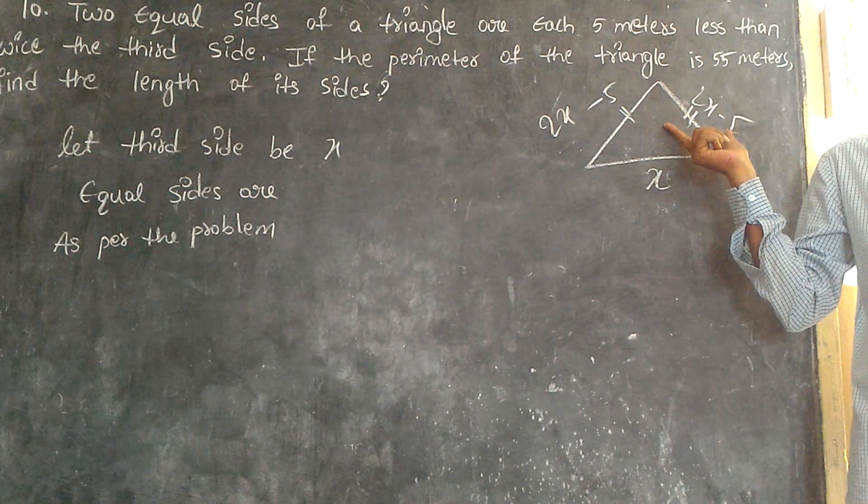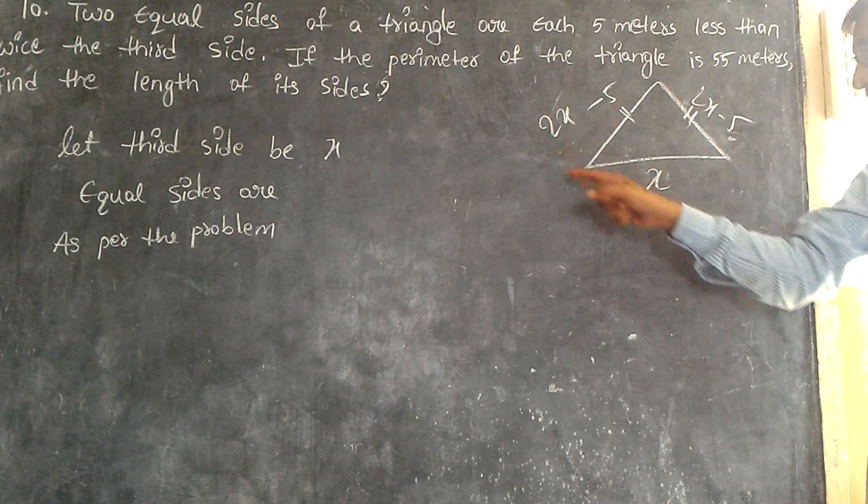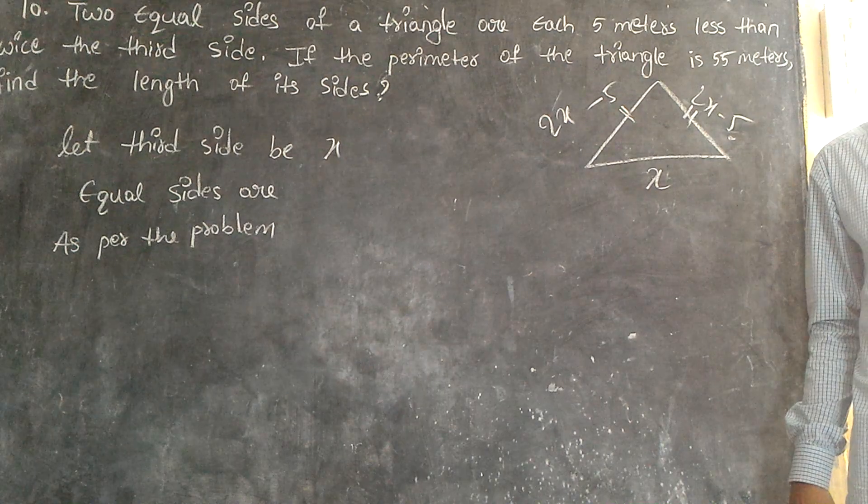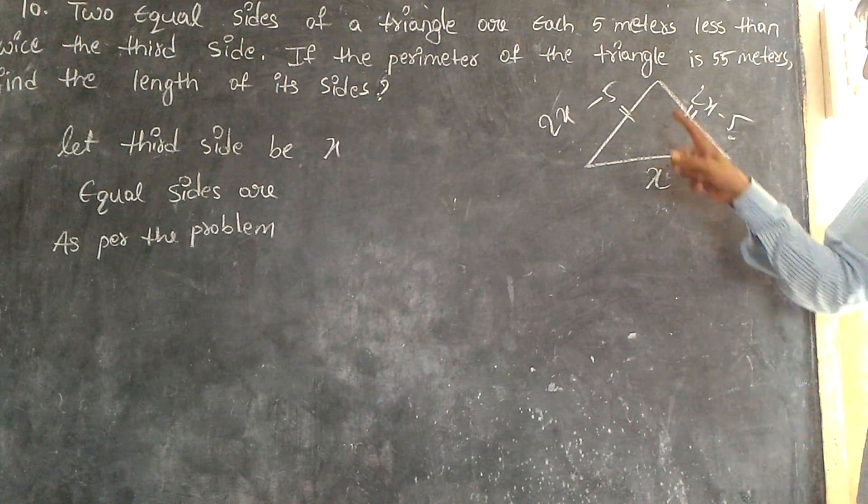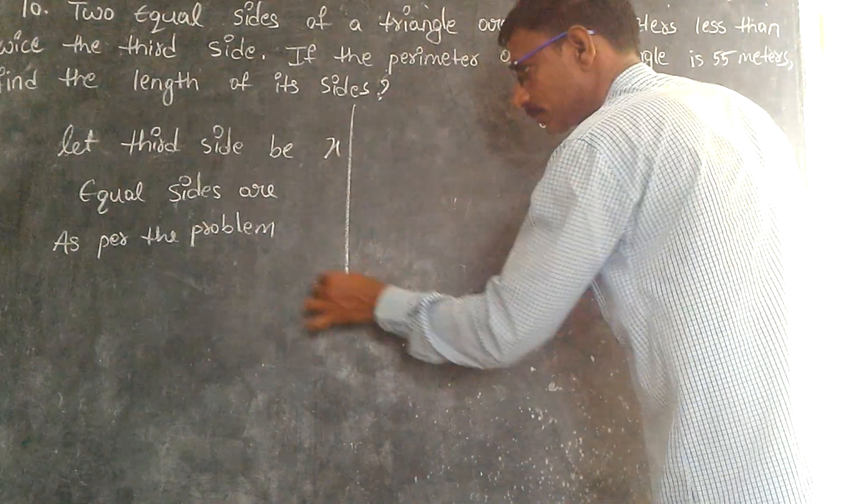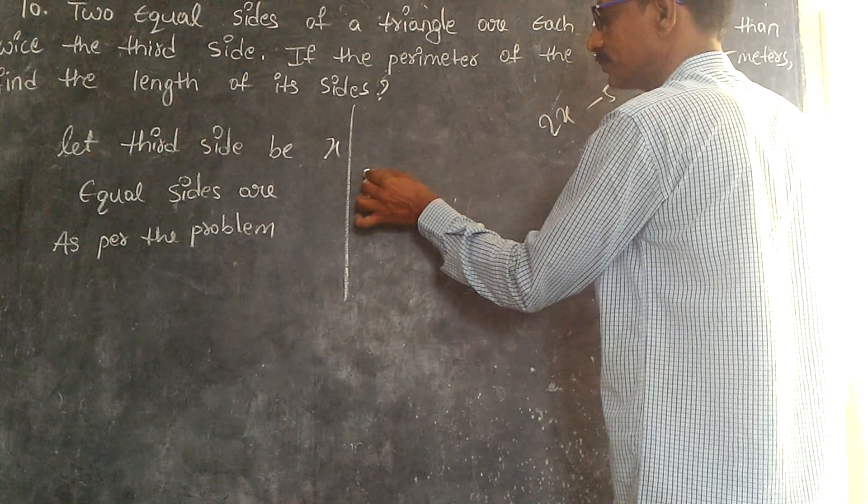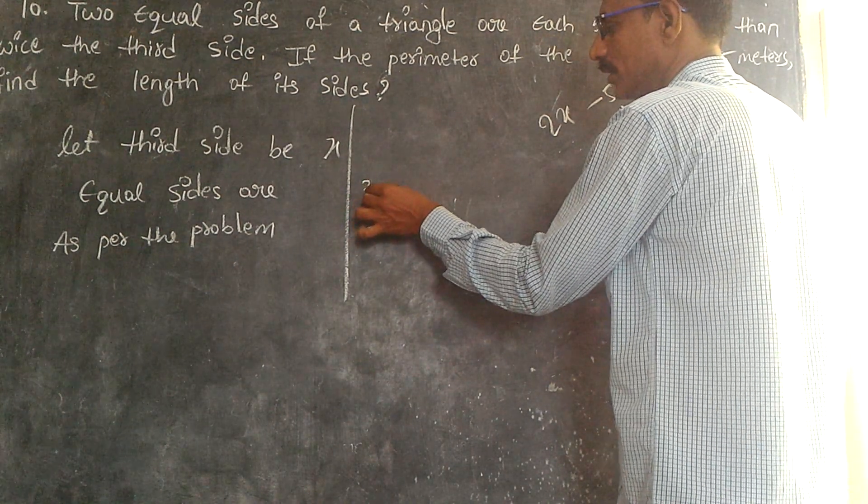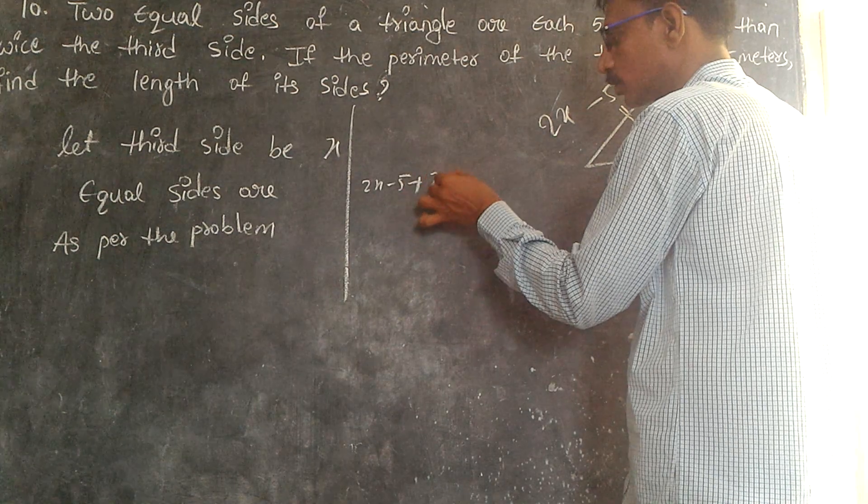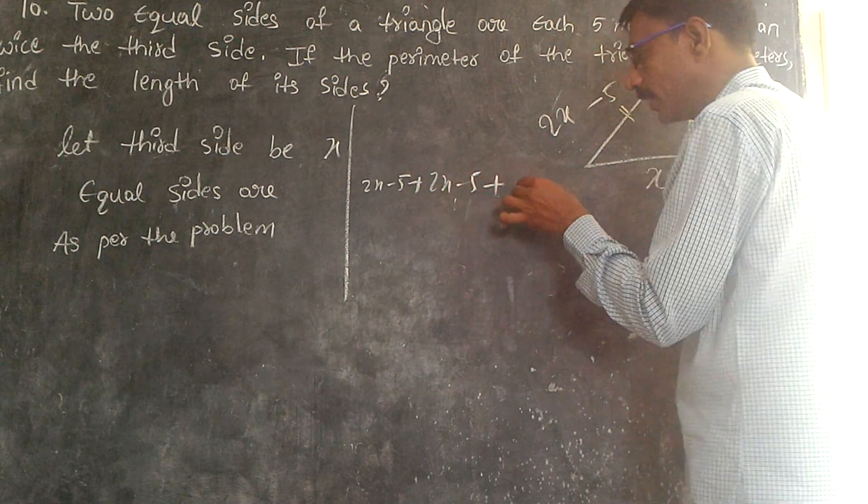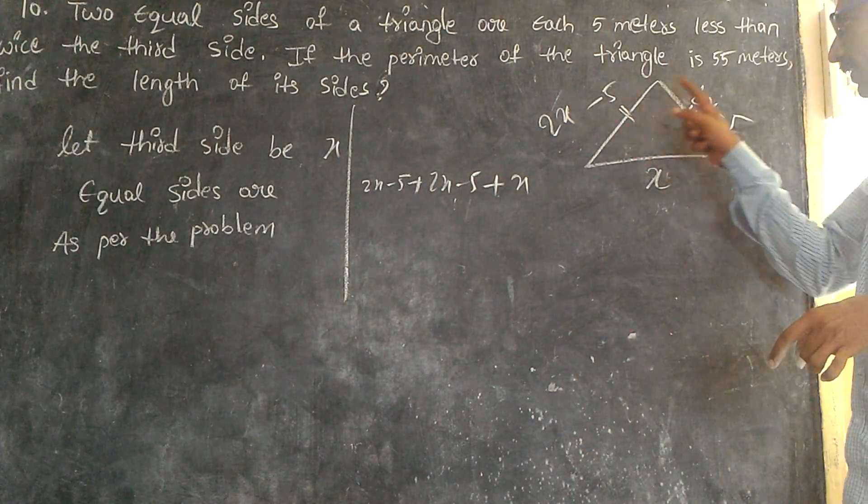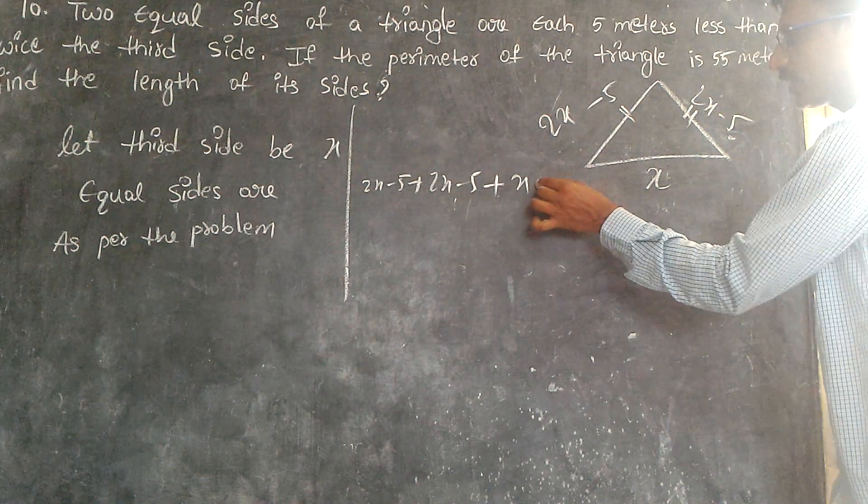Two sides are equal, everybody knows. Sum of these sides is called perimeter. So as per the problem, 2x minus 5 plus 2x minus 5 plus x - this plus this plus this - equals 55 because it is given 55 meters.